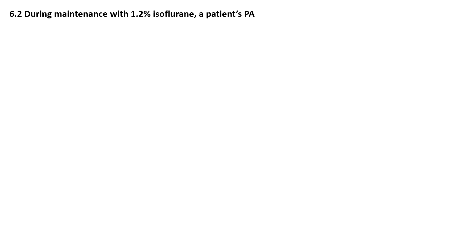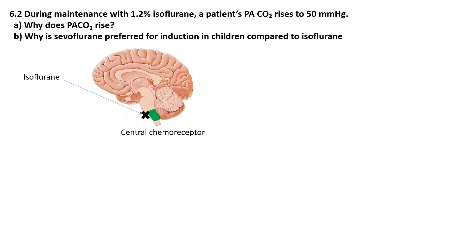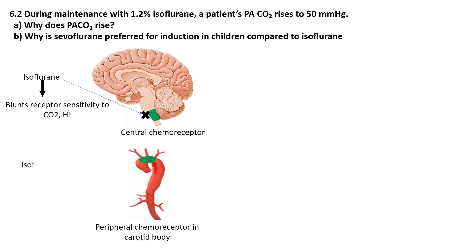During maintenance with 1.2% isoflurane, a patient's PaCO2 rises to 50 mmHg. Why does PaCO2 rise? The rising PaCO2 is the result of respiratory depression that occurs with isoflurane, like any other volatile anesthetic. Isoflurane reduces the sensitivity of the central chemoreceptors in the medulla to elevated levels of CO2 or hydrogen ions in the CSF. Normally, these chemoreceptors stimulate increased ventilation in response to rising PaCO2, but under isoflurane anesthesia this response is blunted, leading to inadequate compensatory hyperventilation. Volatile anesthetics also blunt peripheral chemoreceptors located in the carotid body.